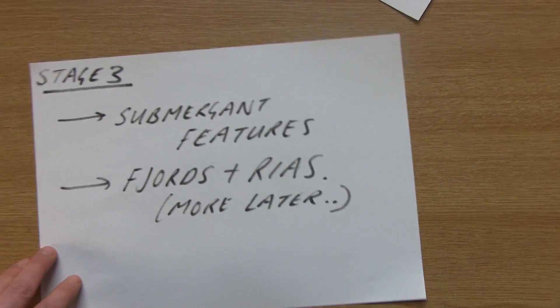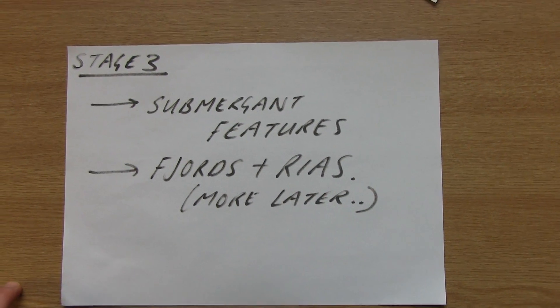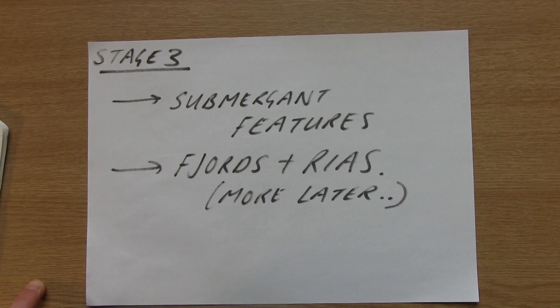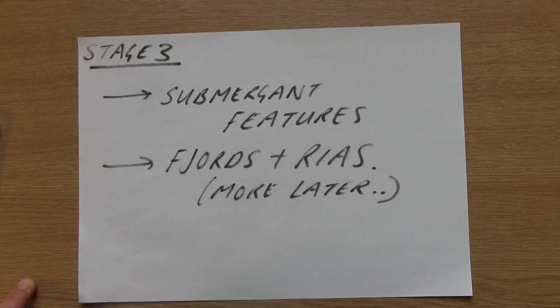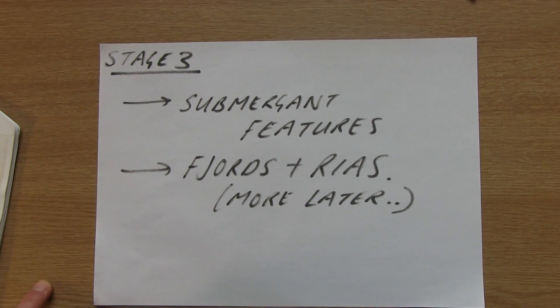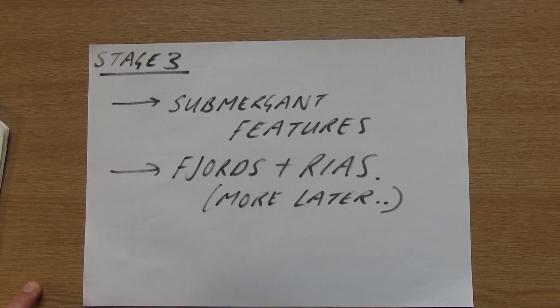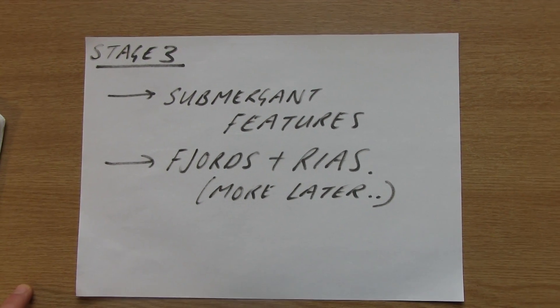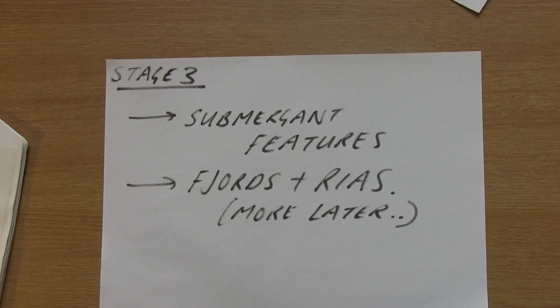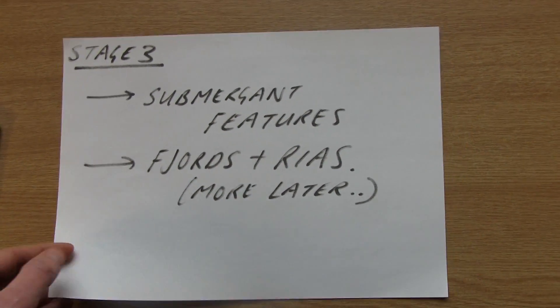This is where things start to get interesting, because we get features created as a result of eustatic rise. Because these features are submerged by rising sea levels, we call them submergent features. We get two features in particular: fjords and rias. You'll need to be able to explain the formation of both, and that comes later on in this video.